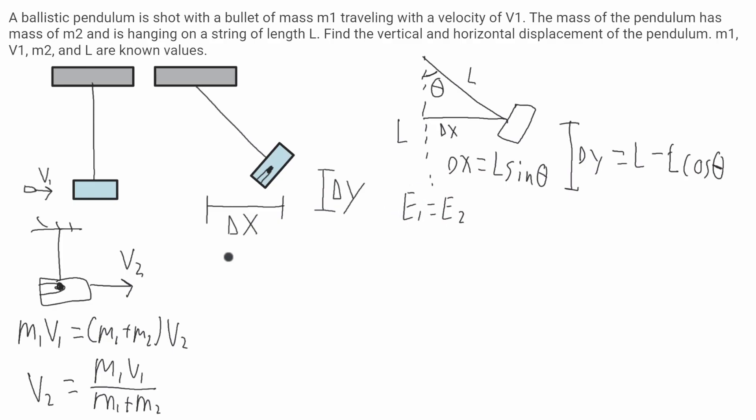Since there's not going to be any non-conservative forces, the energy before will equal the energy after. The energy before I'm calling E1 will just be the kinetic energy of this pendulum and bullet which will depend on v2 and their mass.